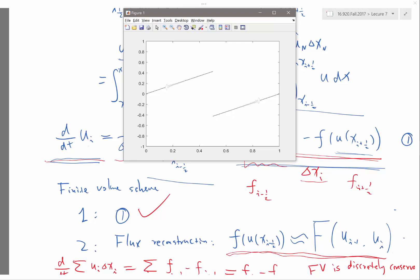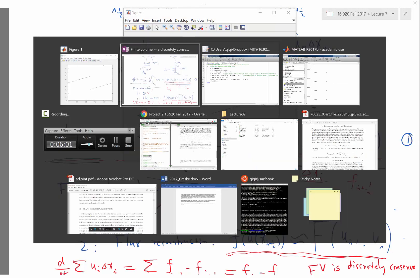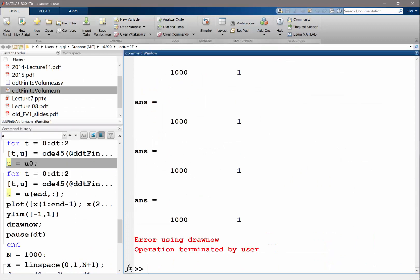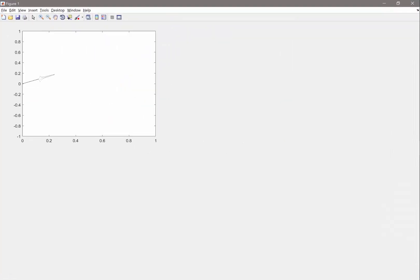Any questions about the phenomenon we're observing? One is finite volume works, and two is the central flux seems to be producing some weird oscillations. So what do we do with the weird oscillations? That's what we are going to discuss next.